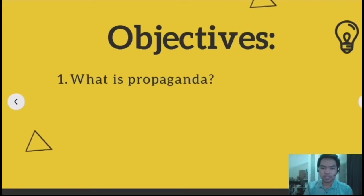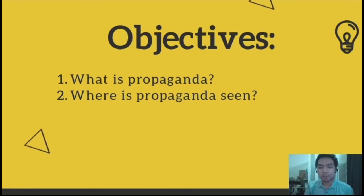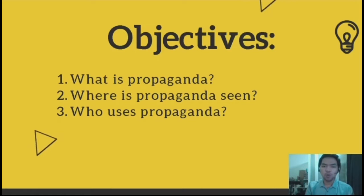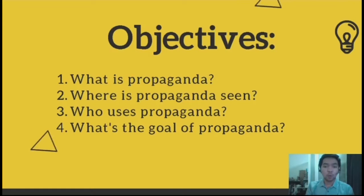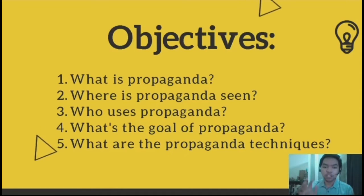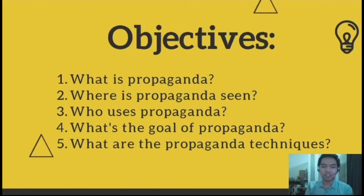We'll start with the first objective: answering what is propaganda. In this lesson, we should understand and be able to define what propaganda is. Second is, where is propaganda seen — where are they commonly seen? Next is, who uses propaganda — who are the people and professionals who use propaganda? We also have, what's the goal of propaganda? And lastly, we should be able to know what the propaganda techniques or devices are. Those are our objectives or questions we should be able to answer after today's lesson.